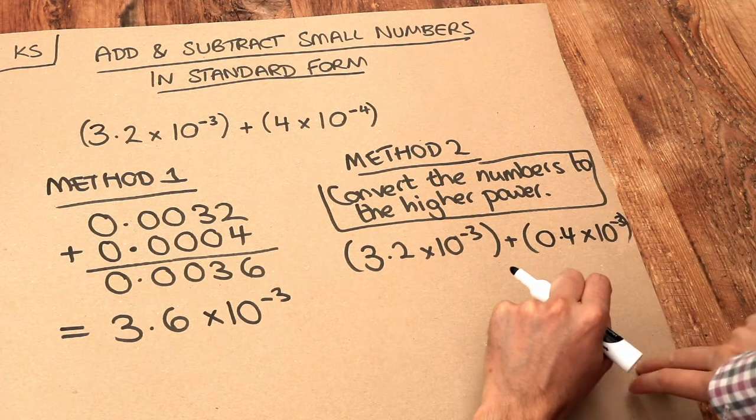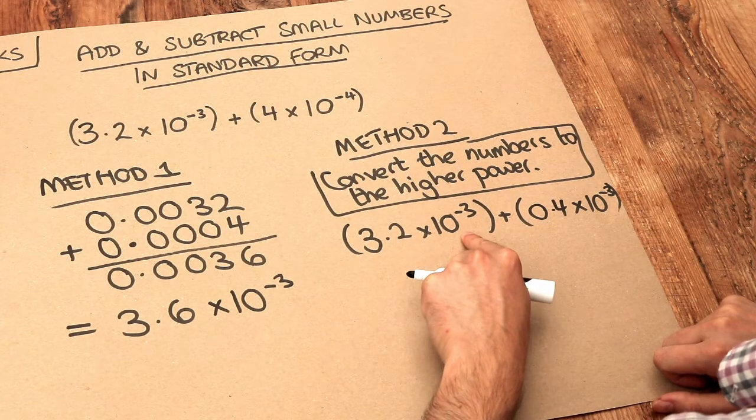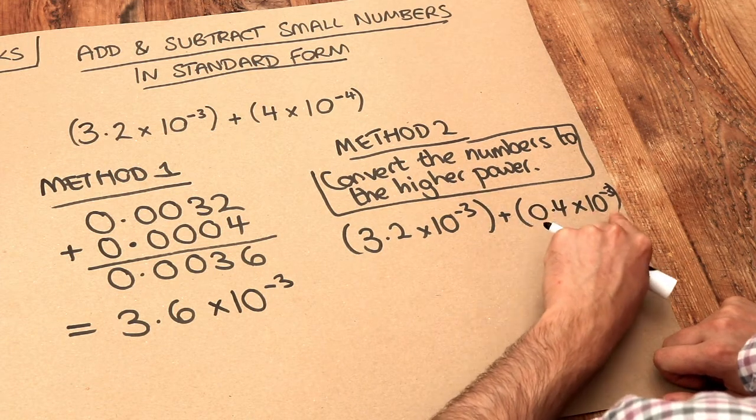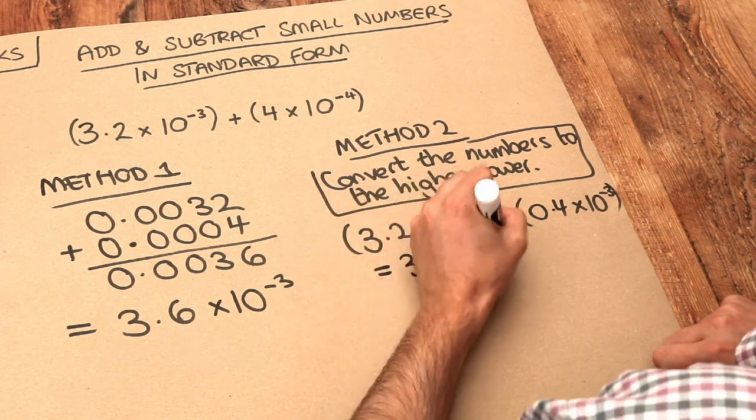It's a bit like like terms. We've got 3.2 lots of 10 to the minus three, and we're adding 0.4 lots of 10 to the minus three. So in total, we have 3.6 lots of 10 to the minus three.